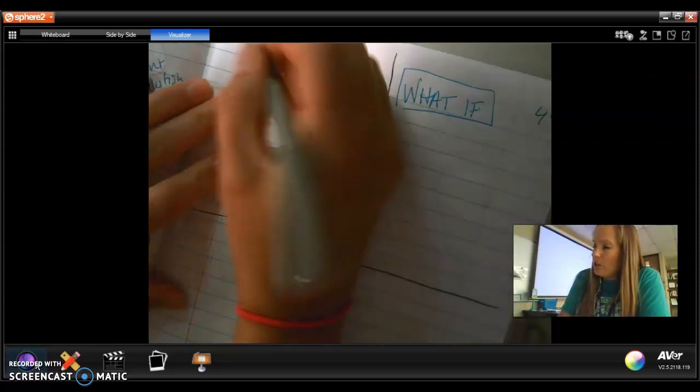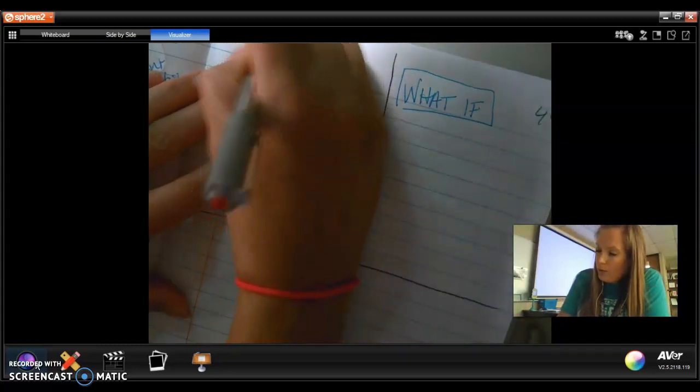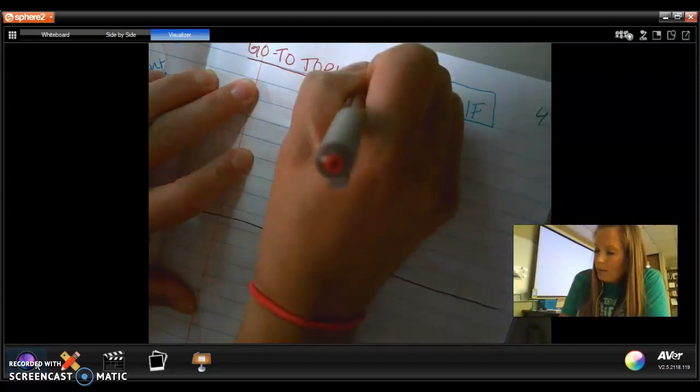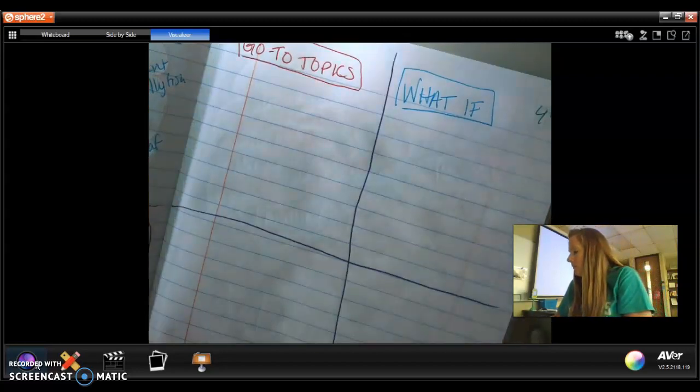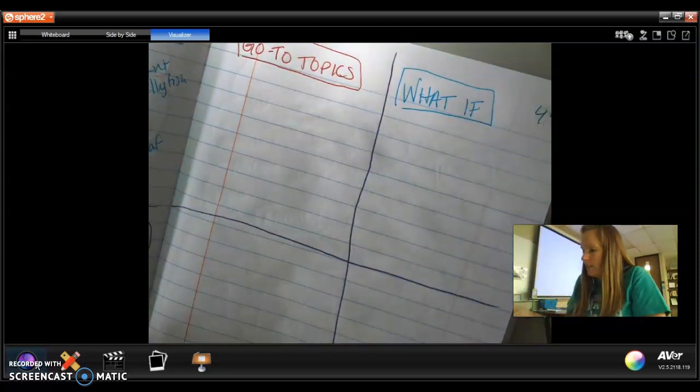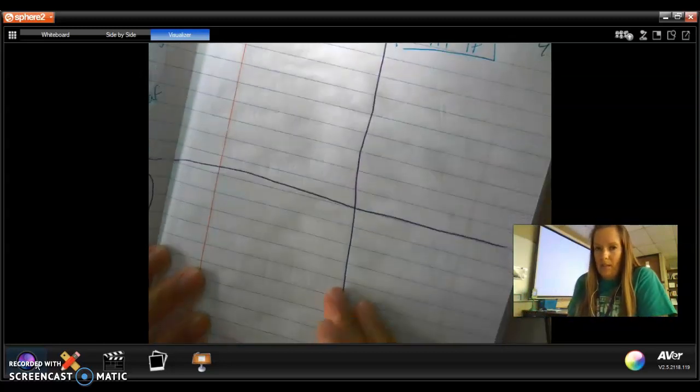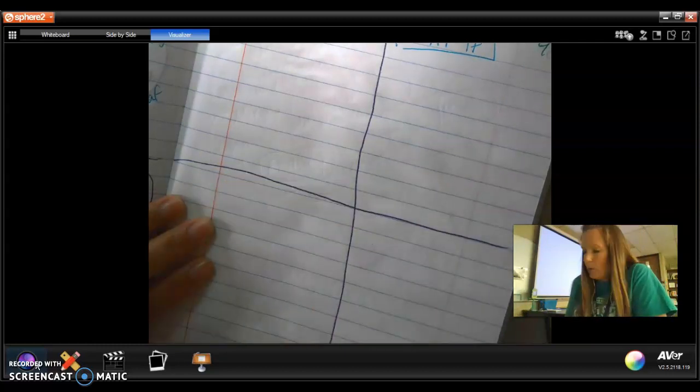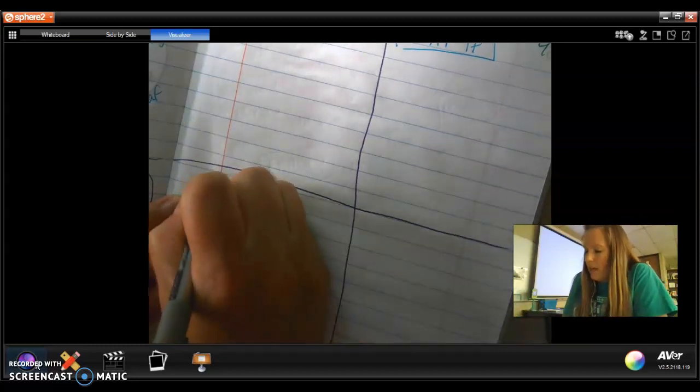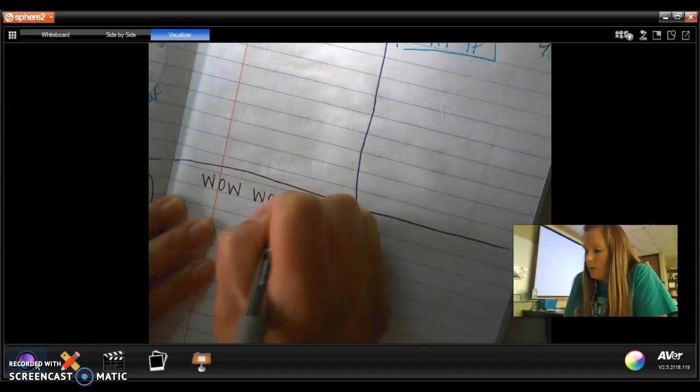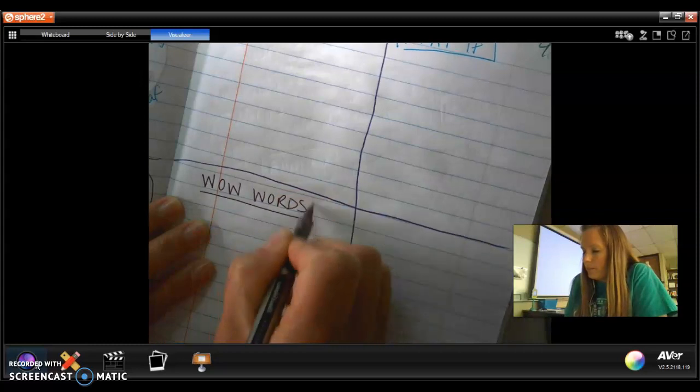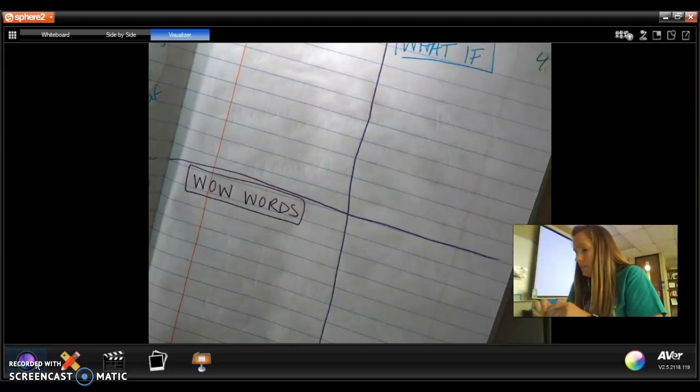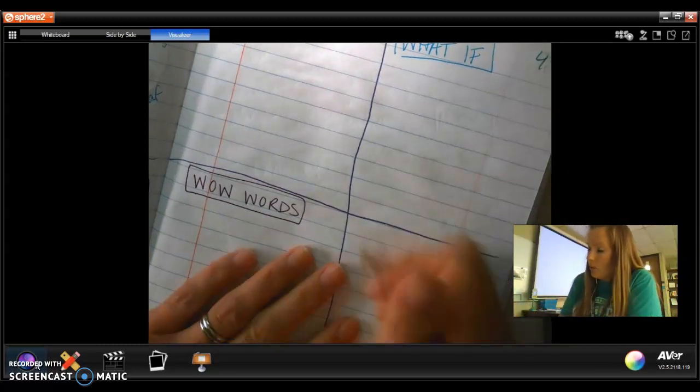The other one that we're going to do is called go to topics. We'll talk about what that means as well. I'm just getting my boxes labeled. My other boxes are both word boxes. So in this box we're going to put, I'm going to call them wow words. You can call it words I love or words I like or anything like that.